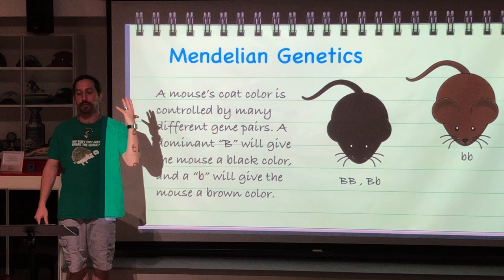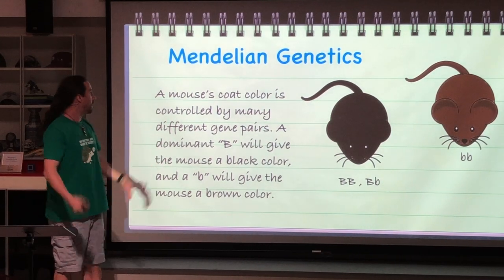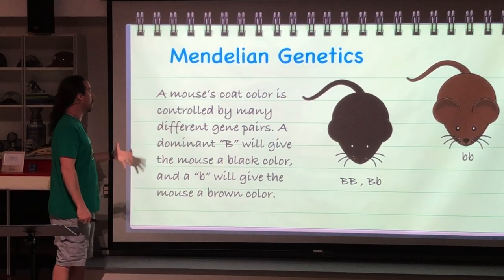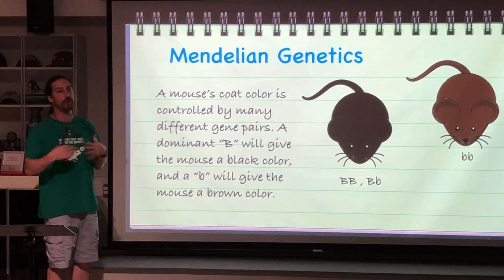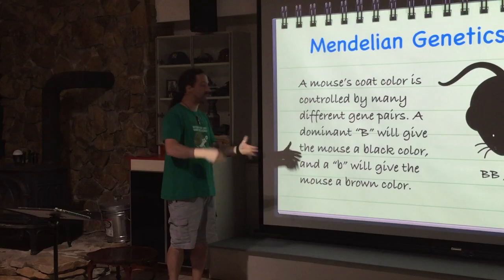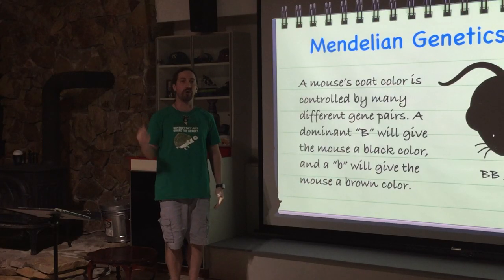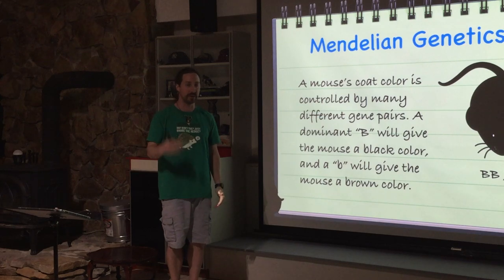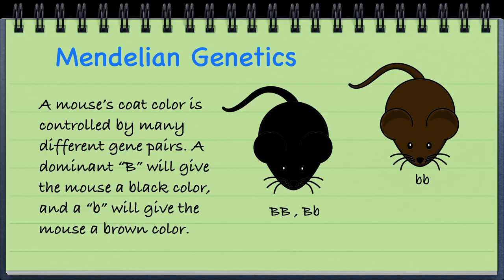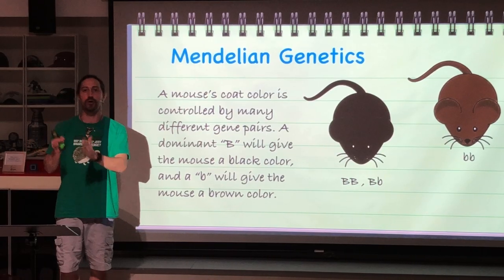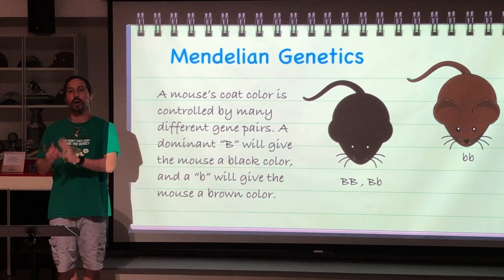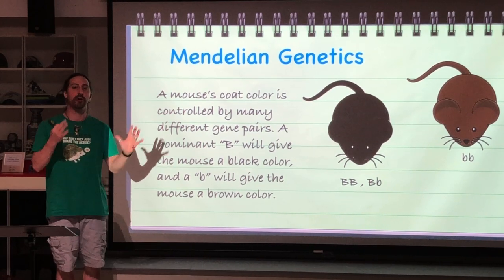To explore this, we're going to look at mice. In mice, coat color is controlled by many different gene pairs. We're going to look at the genes that control coat color. The first gene, in simple form, follows dominant to recessive: dominant appears black, and recessive appears brown.